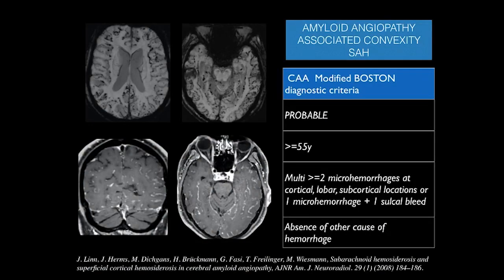Subarachnoid bleed is now one of the diagnostic criteria for CAA. The modified Boston diagnostic criteria requires either two or more microhemorrhages, or one microhemorrhage and one sulcal bleed. Any patient aged 55 or older without another obvious cause of subarachnoid bleed can be labeled probable CAA on this basis. The more typical picture of CAA includes multiple microhemorrhages along the subcortical U fibers, though that many microhemorrhages are not required to make the diagnosis.